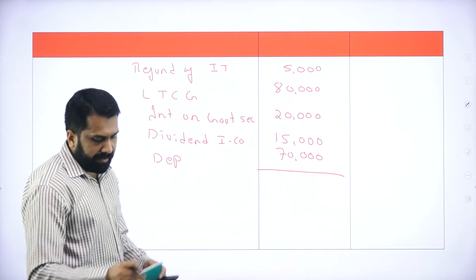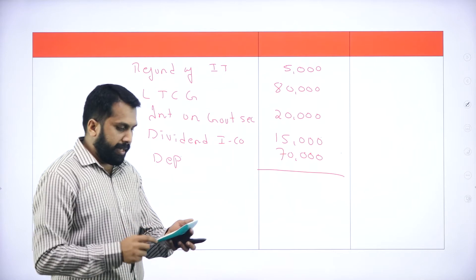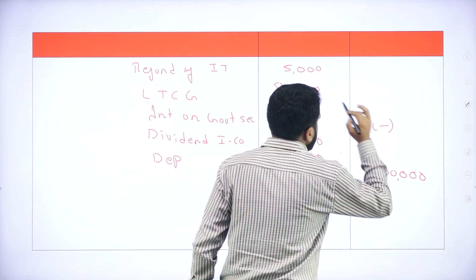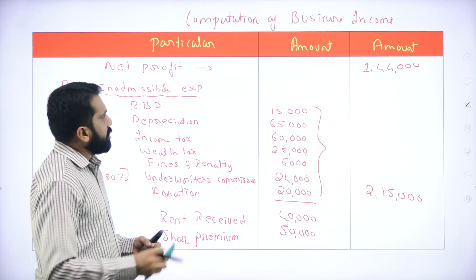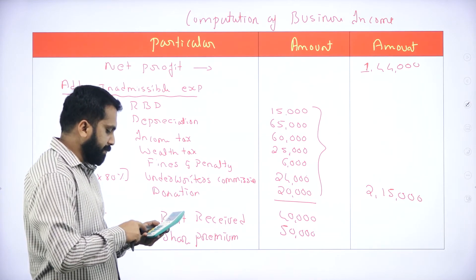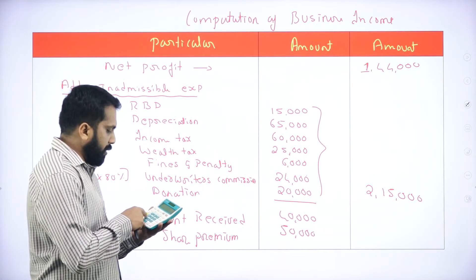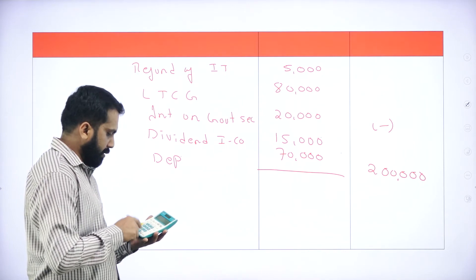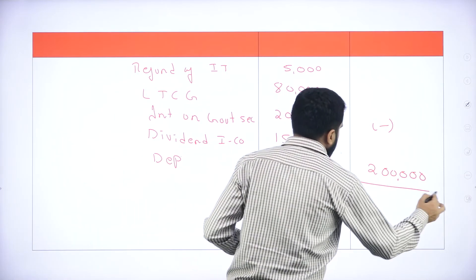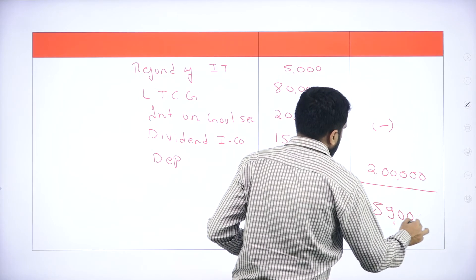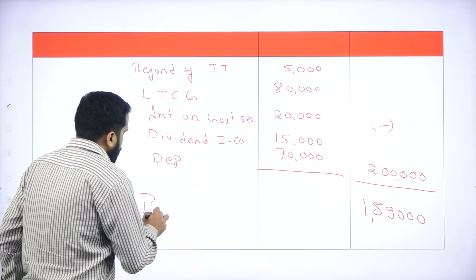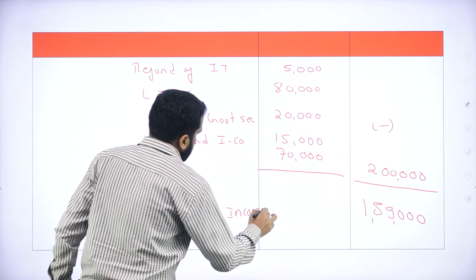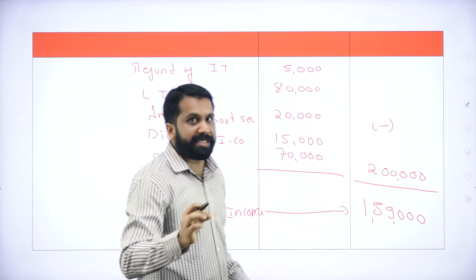So the answer is: 1,44,000 plus 2,15,000 minus 2,00,000 equals 1,59,000. This is all about your business income. We're done with your business income.